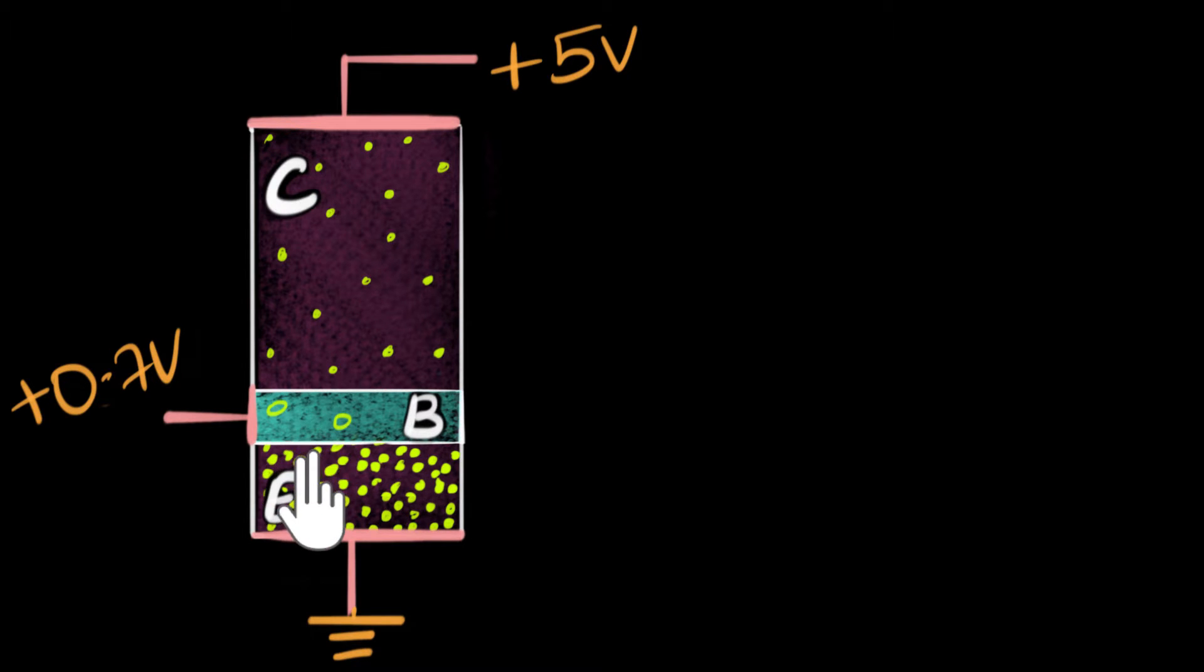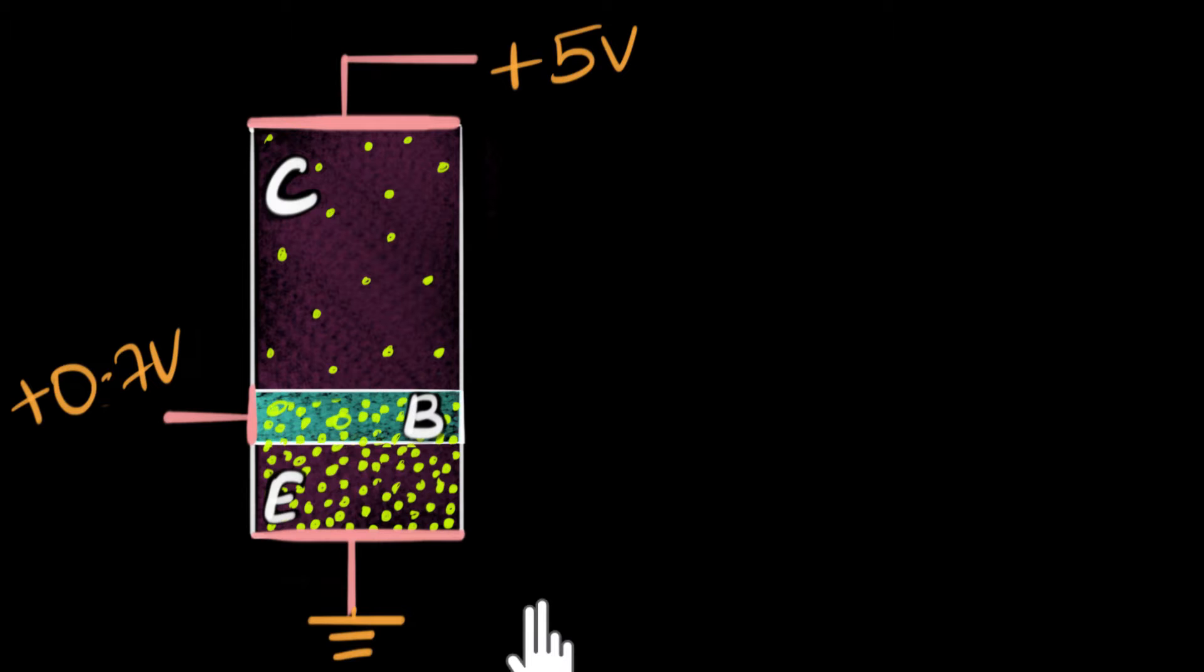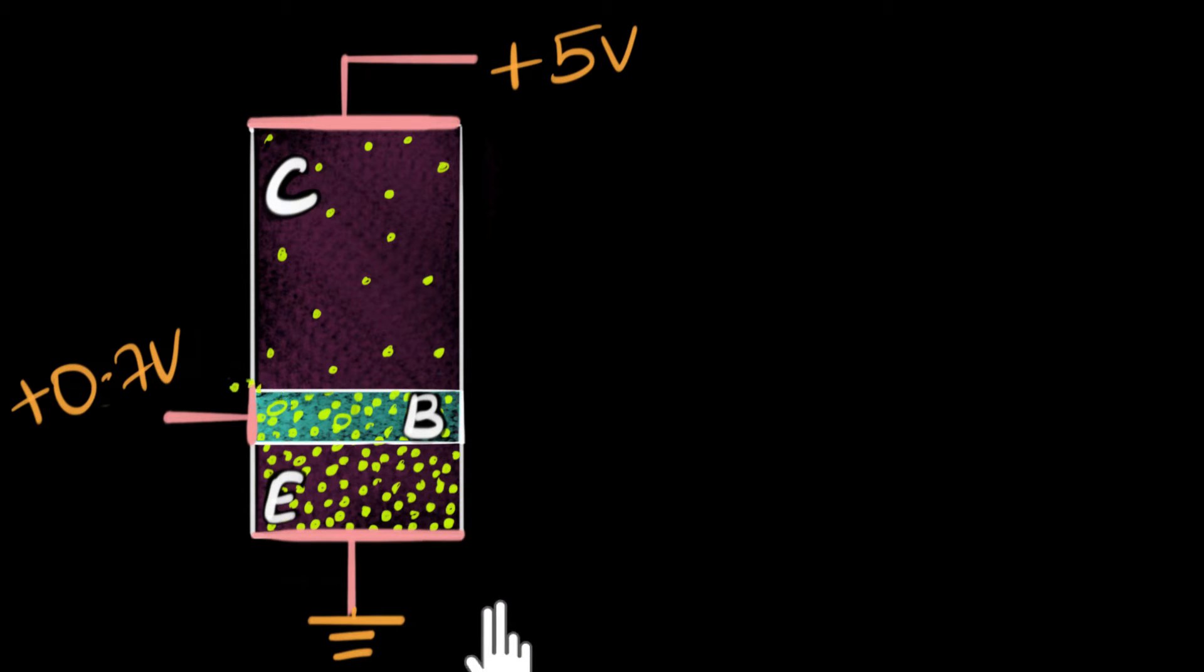Due to this forward bias, the depletion region here vanishes and the charge carriers can diffuse into each other. So the electrons over here, they diffuse into the base region. And since base region has a very tiny amount of holes, only few of them recombine with the holes over here. And as a result, only a small fraction of these electrons can come out from the base terminals.